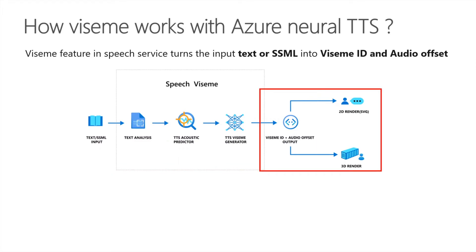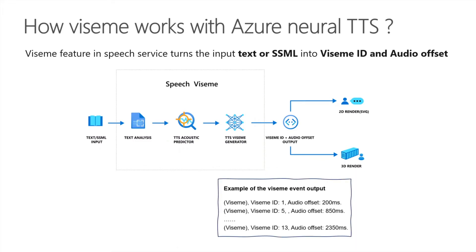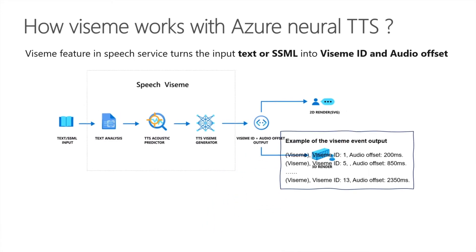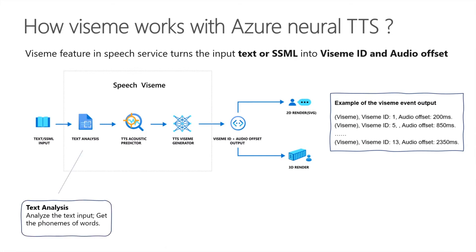With the Viseme outputs, you can build your own characters and automatically animate them with the help of 2D and 3D rendering engines. Here is an example of the Viseme event output. The underlying technology for the Viseme feature consists of three components. The text analysis component is designed to analyze the text input and get the phonemes of words.